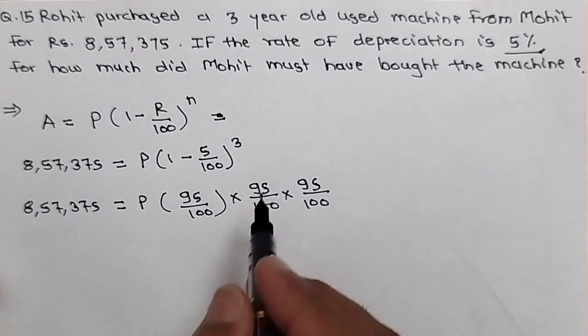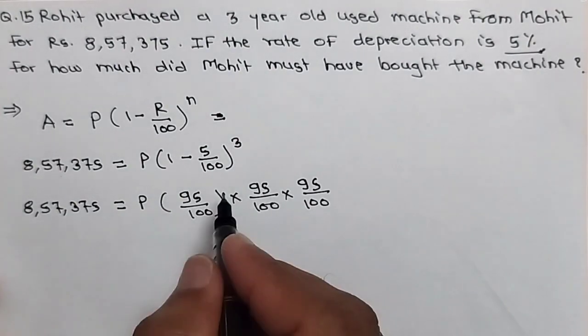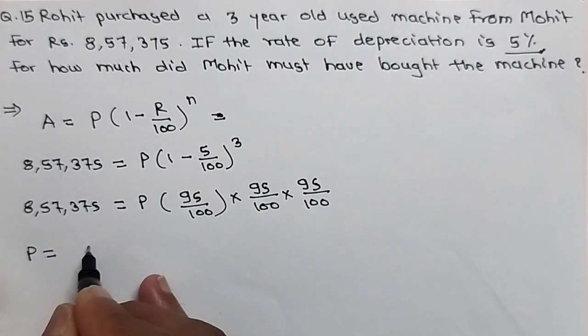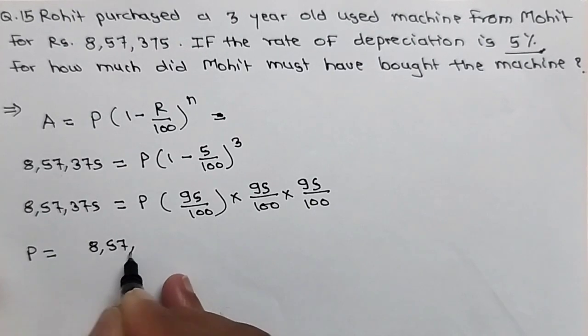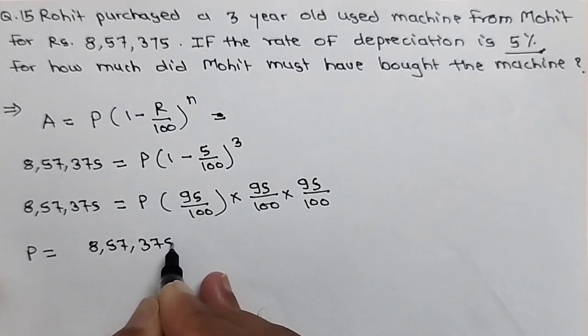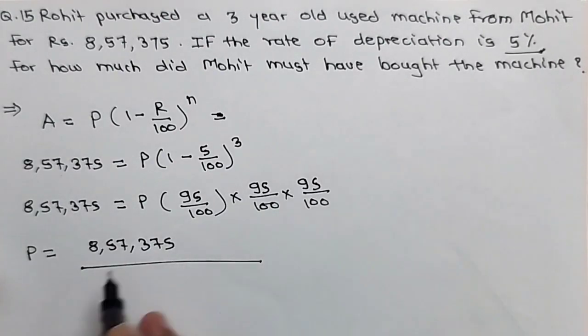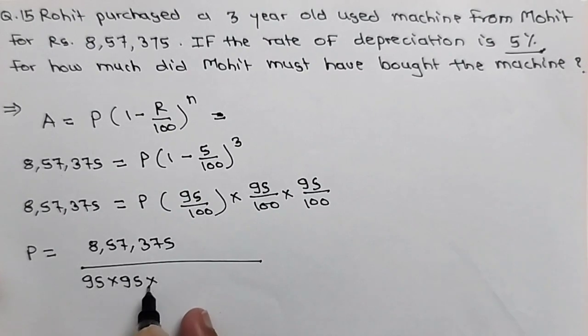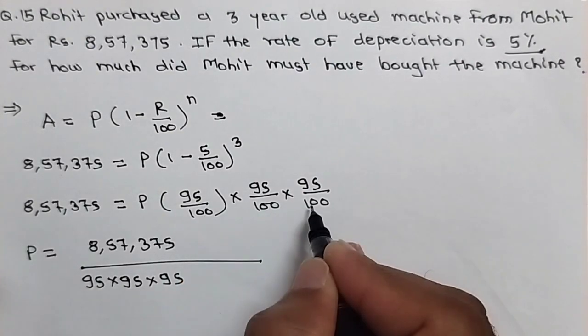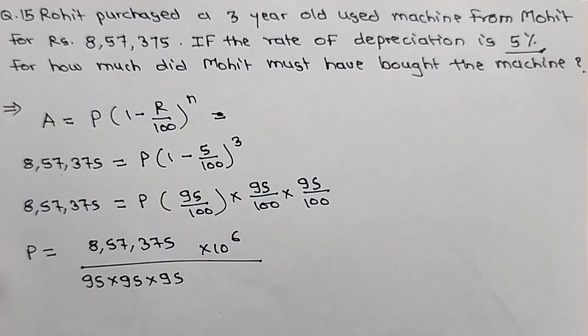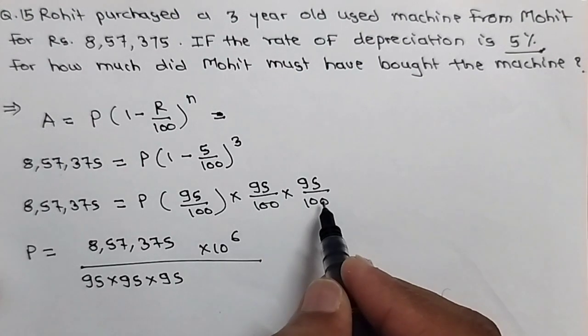Now transfer this 100 here and 95 here, so position will get changed. So P is equal to 857,375. Now 95, 95, 95, 3 times. Both will be, 3 numbers will be in denominator. Because here these are in numerator, so 95 into 95 into 95. Then, 3 times 100 means 10 raised to 6. Isn't it? 100 means 10 raised to 2, 10 raised to 2, 10 raised to 2, that's 10 raised to 6.